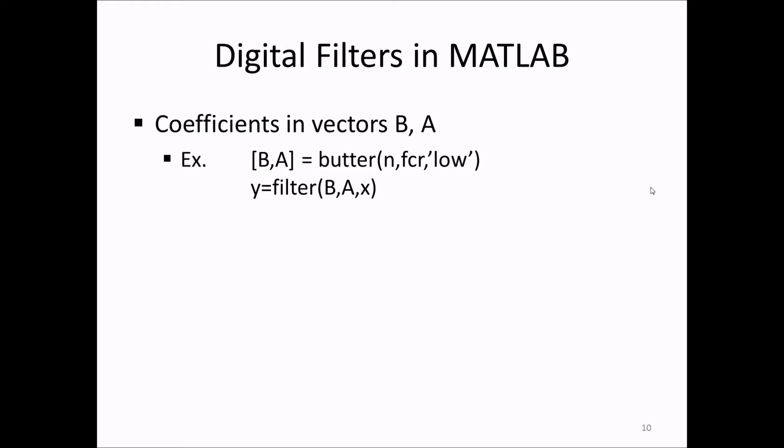B, A equals Butter of N FCR and the string low. This produces a low-pass Butterworth filter of order N at a cutoff frequency in the variable FCR. The second command is used to filter the signal. So we produce an output Y with a filter command with a syntax of B, A, X.